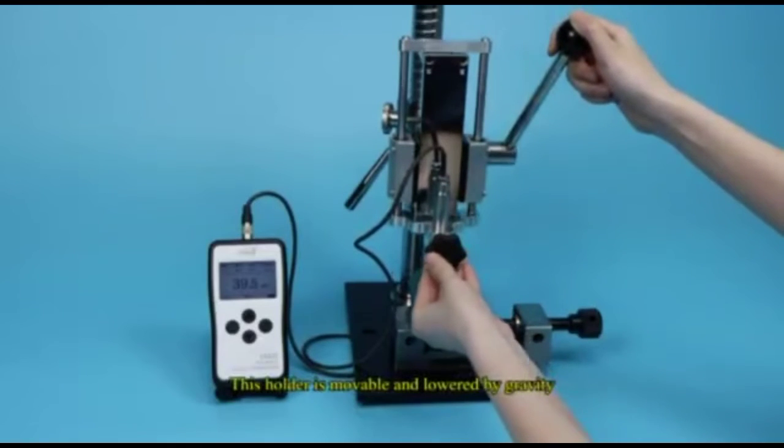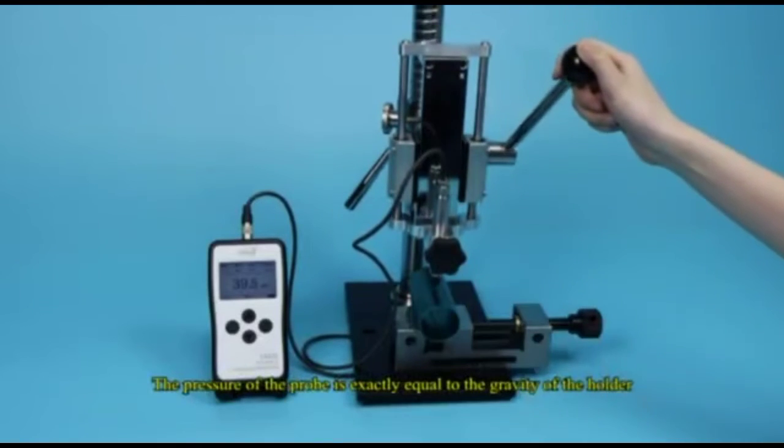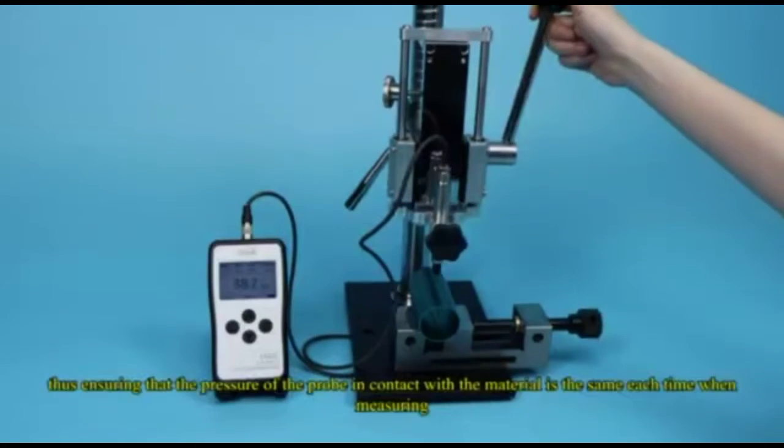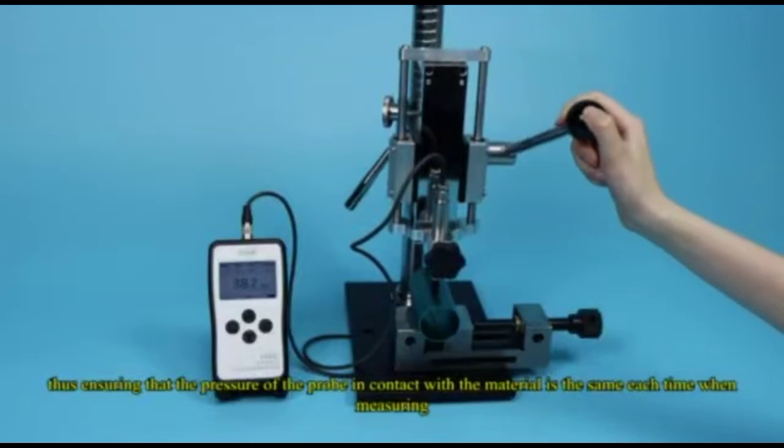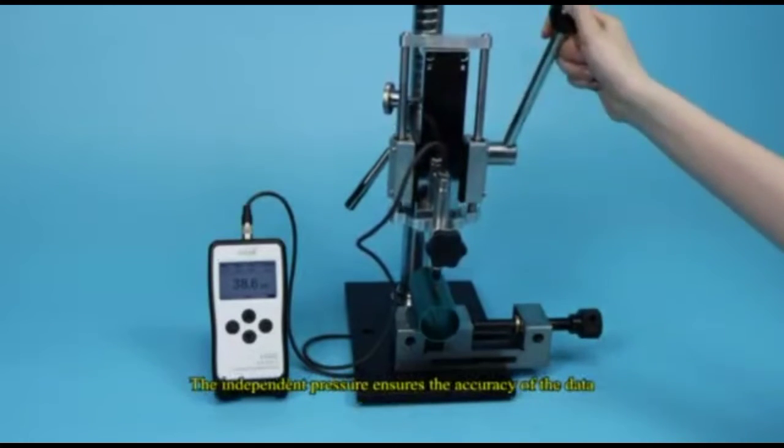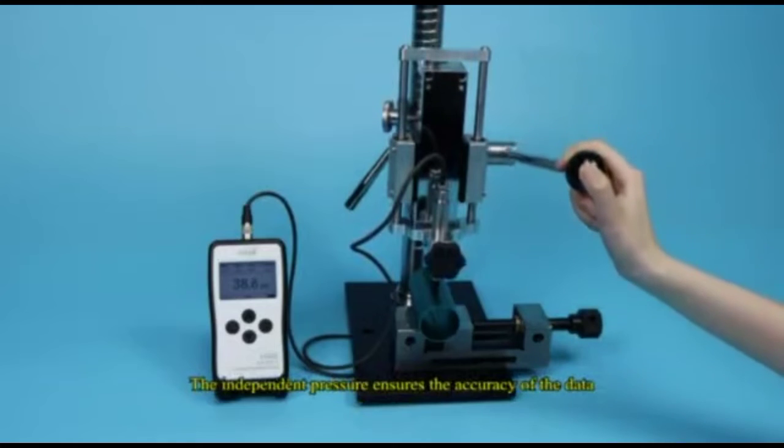This holder is movable and lowered by gravity. The pressure of the probe is exactly equal to the gravity of the holder. Thus ensuring that the pressure of the probe in contact with the material is the same each time when measuring. The independent pressure ensures the accuracy of the data.